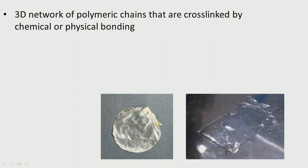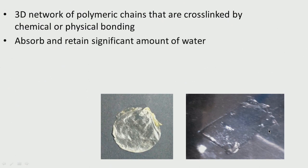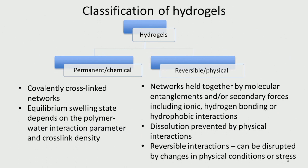A hydrogel is a 3D network of polymeric chains that are cross-linked by chemical or physical bonding — chemical bonds or non-bonded physical interactions. They absorb and retain large amounts of water and contain many hydrophilic groups, including negatively charged groups that can take up cations. The classification includes permanently chemically bonded hydrogels and reversible physically bonded hydrogels.